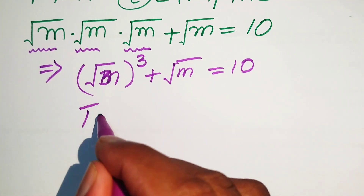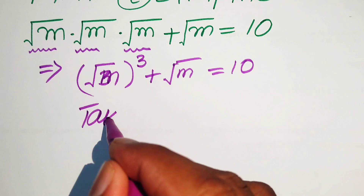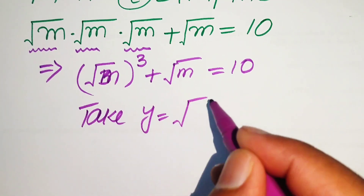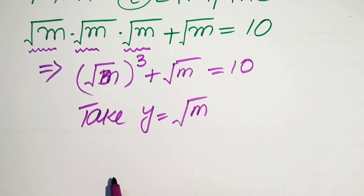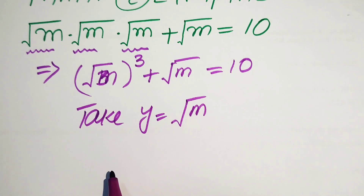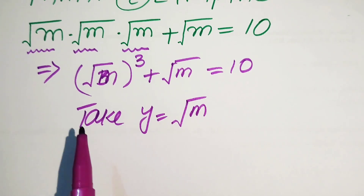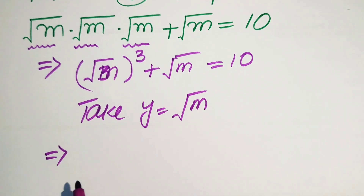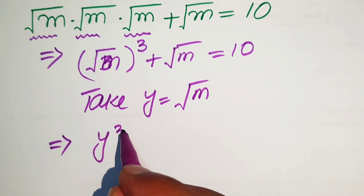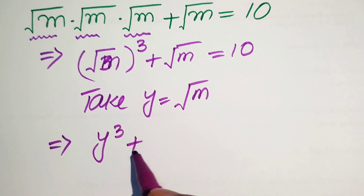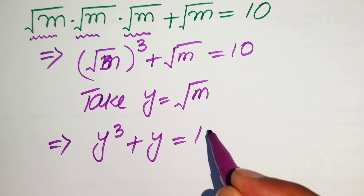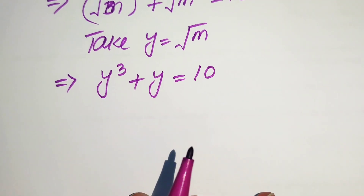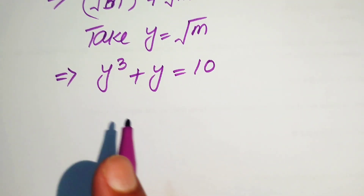We take the substitution y equals the square root of m. When we substitute y equals square root of m, our equation is rewritten as y cubed plus y equals 10. This equation is now cubic in the variable y.